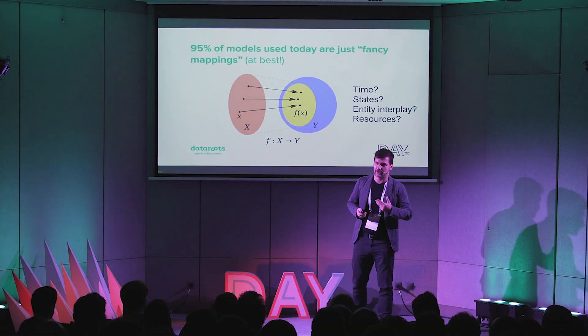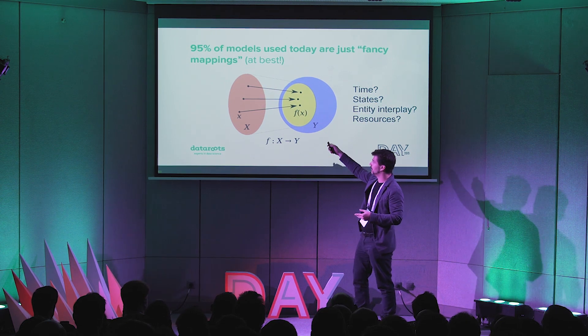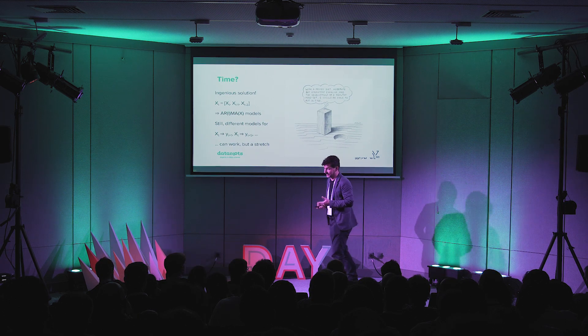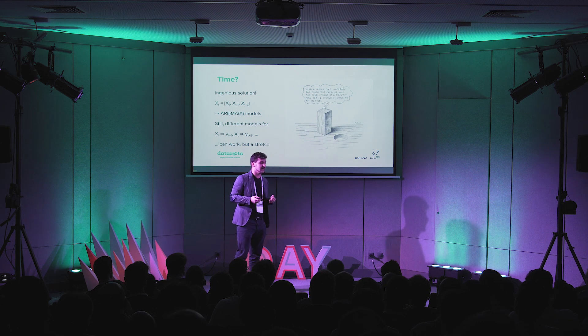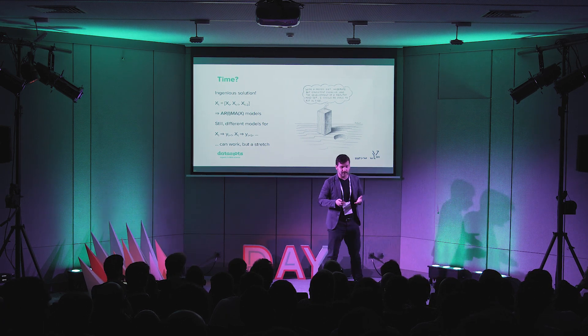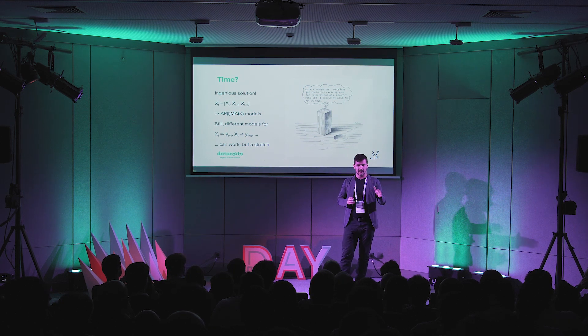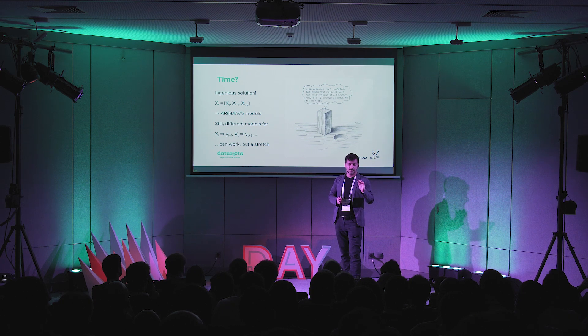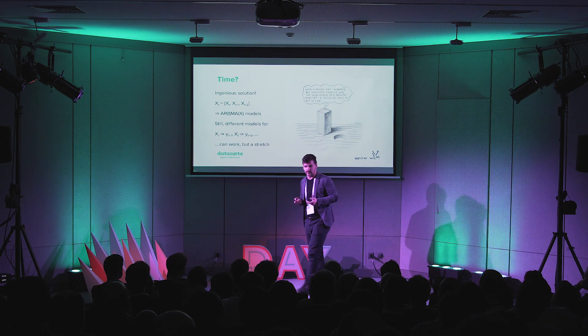All the models we've talked about today — from linear models over random forest, gradient boosting, to deep learning — share one common thing: they're black box models. They're just learning to map a vector to a vector or a vector to a point, flying over the whole process happening in between. This works fantastically in many applications — don't get me wrong — but when we have time-dependent processes with certain states, entity interplay, and resources, things become very complex. A clever hack is putting previous values as features in our feature vector to get a surrogate ARIMA model — it works for a limited set of processes, but it's a stretch. It's like hammering a square peg in a round hole.